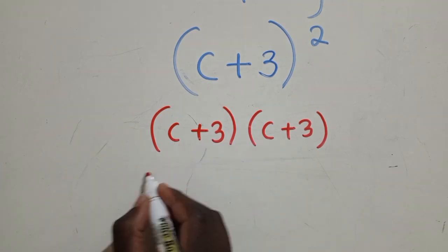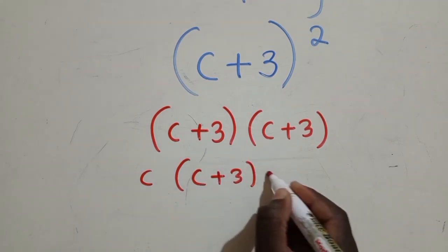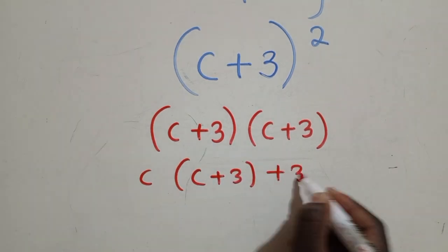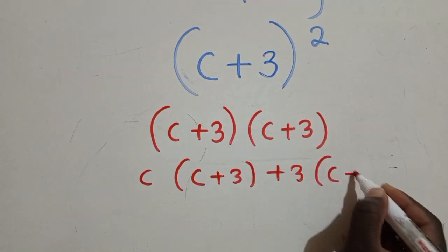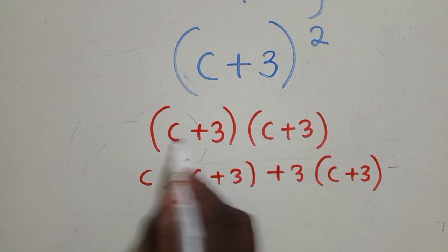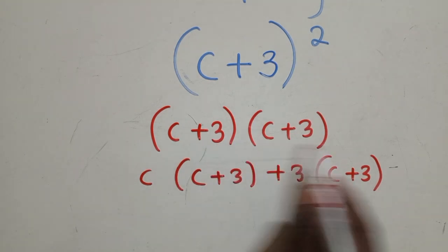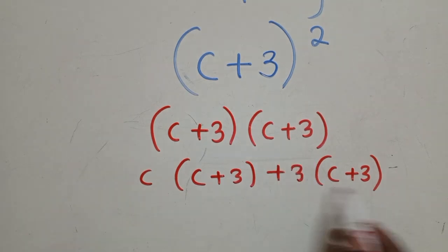So that means we shall have C open bracket C plus 3, plus 3 open bracket C plus 3, like this. So we just get this being multiplied by everything, and this is what we have. This also being multiplied by everything here, and this is what we have.